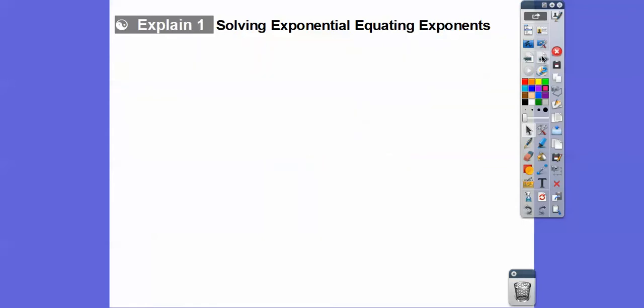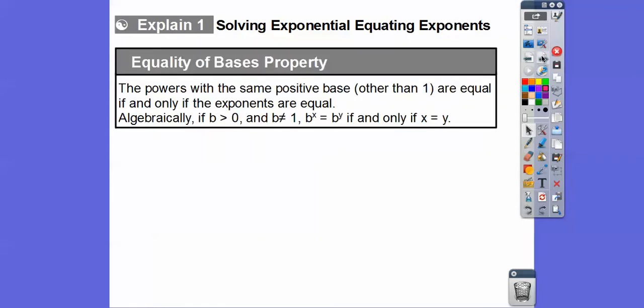All right, so we're going to go ahead and talk what's called, this book calls it the equality of base property. And it just says if we have a b to a power equals b to another power, then these powers must equal each other. B has to be greater than 0. So it can't be 0, it has to be greater than 0. And it can't be 1 because, you know, 1 to the 7th equals 1 to the 27th. So 1 is the exception and so is 0. But any other number, if these bases are the same, then the exponents are going to be the same.